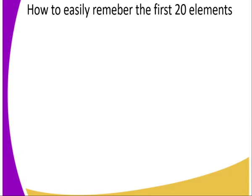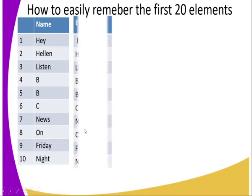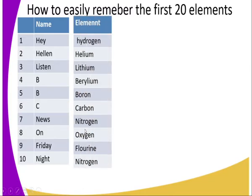Now, how can we easily remember the first 20 elements? There is a simple mnemonic we can use. We simply sing: 'Hey Helen, recent BBC news on Friday night, by...' By saying this, we have illustrated the first 10 elements, whose symbols are indicated.